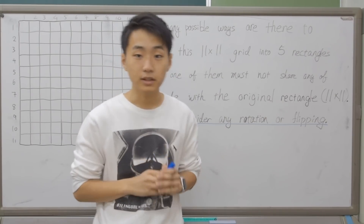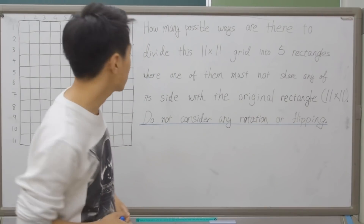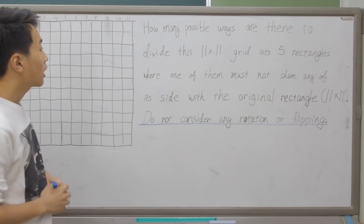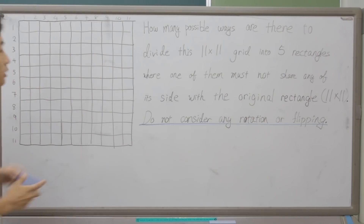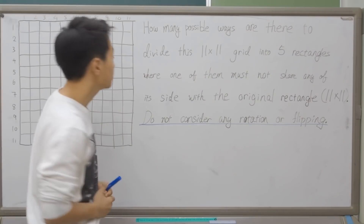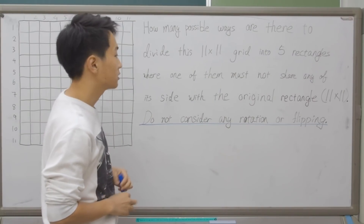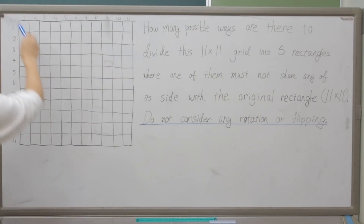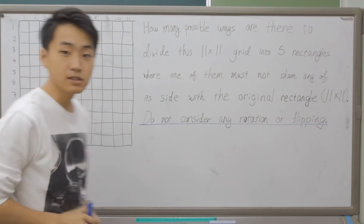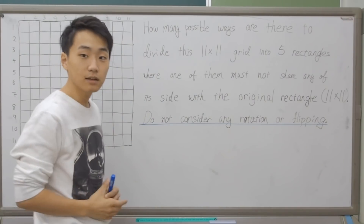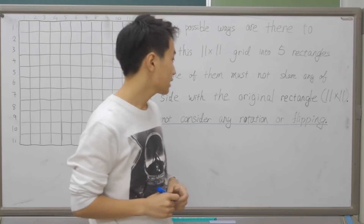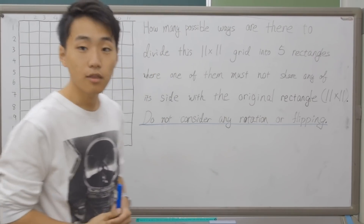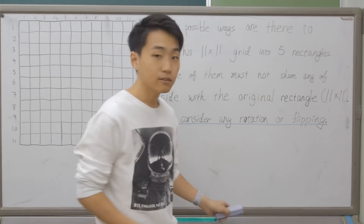Let's begin with the explanation of the question. How many possible ways are there to divide this 11×11 grid into five rectangles, where one of them must not share any side with the original rectangle's sides? And we do not consider rotations as the same — different patterns count separately. We have to count how many there are. So let's dive into it.